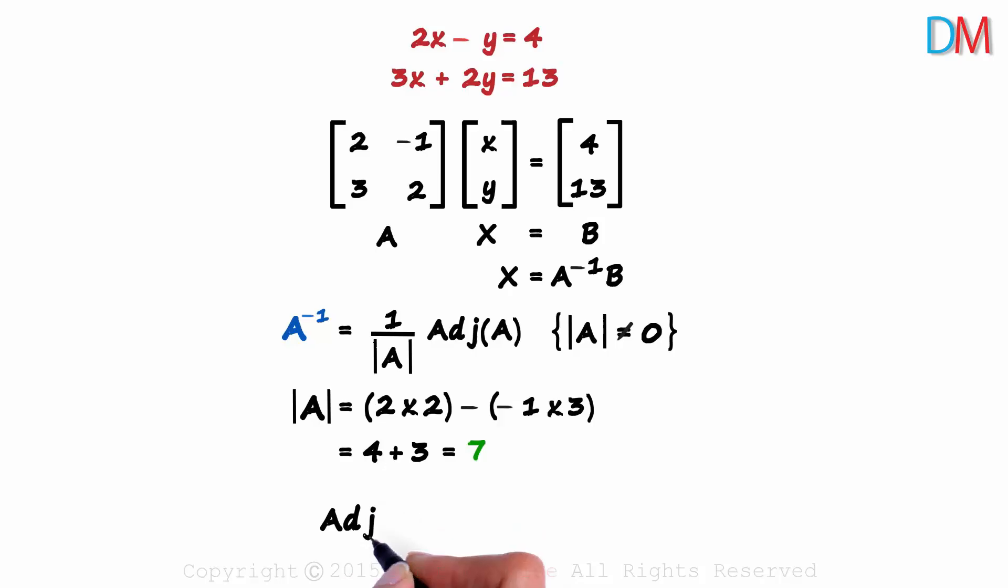Now let's find the adjoint of A. Do you remember the shortcut to find the adjoint of a 2 by 2 matrix? Interchange these two and change the sign of these two elements. As these two are the same, interchanging them will also give us 2 and 2. Changing the sign of minus 1, we get 1. And changing the sign of this, we get minus 3. This is the adjoint of A.